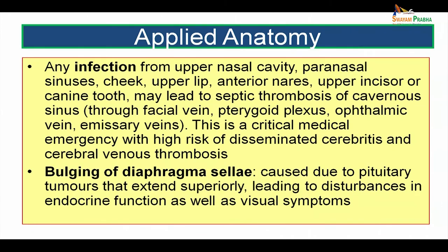Infection from the upper nasal cavity, paranasal sinuses, cheek, upper lip, anterior nares, or upper incisor or canine tooth may lead to septic thrombosis of the cavernous sinus through the communications the cavernous sinus has with the facial vein, the pterygoid plexus of veins, ophthalmic veins, and emissary veins. This is a critical medical emergency with high risk of disseminated cerebritis and cerebral venous thrombosis.